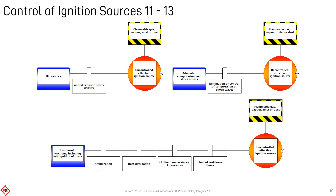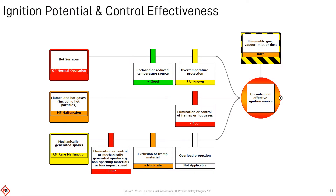Sensitive materials, which have the potential to auto-ignite, should be stored or processed under benign conditions. The likelihood of an ignition source occurring or being present can be categorized using a simple relative frequency ranking, according to the conditions that would create the threat. The effectiveness of each prevention control can also be relatively ranked, based on evidence, experience, or judgment.